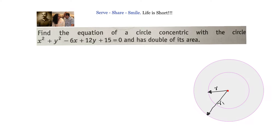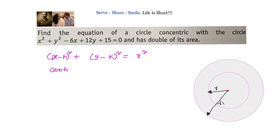We can solve this problem in two methods: using the standard form or the general form of the circle equation. We will solve it using standard form. The standard form is x minus h whole square plus y minus k whole square equals r squared, where the center is at h comma k and the radius is r.